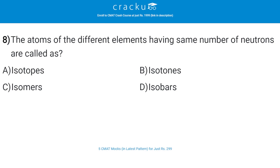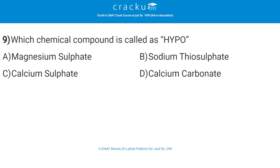The atoms of different elements having the same number of neutrons are called? The correct answer is B — isotones. Two atoms with the same atomic number but different mass numbers are called isotones. The next question: which chemical compound is called hypo? The correct answer is B — sodium thiosulfate.